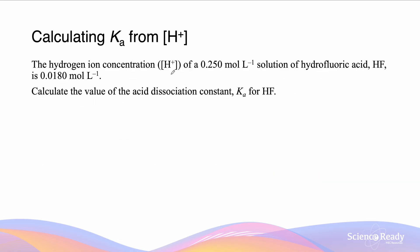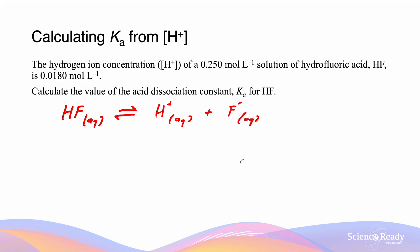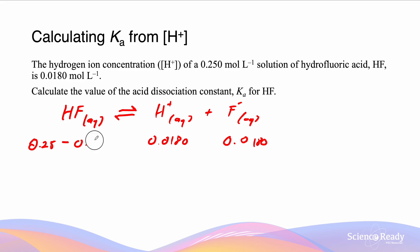For this question, the hydrogen ion concentration H⁺ of a 0.25 mol/L solution of hydrofluoric acid (HF) is 0.0180 mol/L. Calculate the acid dissociation constant Ka for HF. We start by writing the dissociation equation — since it's a weak acid, HF is in equilibrium to form H⁺ and the fluoride ion F⁻ (the conjugate base). Since H⁺ concentration is 0.0180 and F⁻ is in a 1:1 ratio, F⁻ is also 0.0180 mol/L. The remaining HF is 0.25 minus 0.0180.